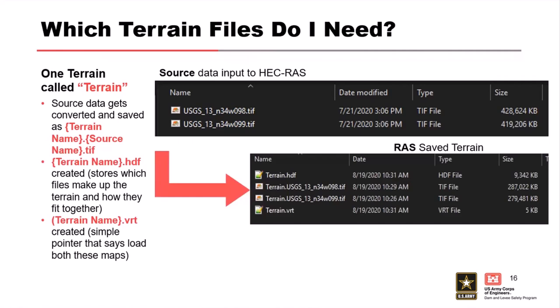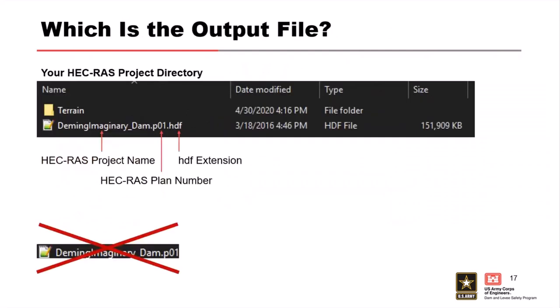Terrain files are like shapefiles — if you say you want a shapefile of something, really you want like four files because they have multiple pieces. That's the same with RAS terrains. When building a RAS terrain, I take some number of source files, import them into RAS, and it comes out with multiple files, each with a prefix of whatever you name the terrain. In this case I called it 'terrain.' You'll have an HDF, some number of TIFFs, and a VRT. You need to bring all of that. In the selector you're only going to select the HDF file, but the others need to be next to it. A lot of times people just send the HDF and you'll get an error — make sure you bring the whole caboodle.